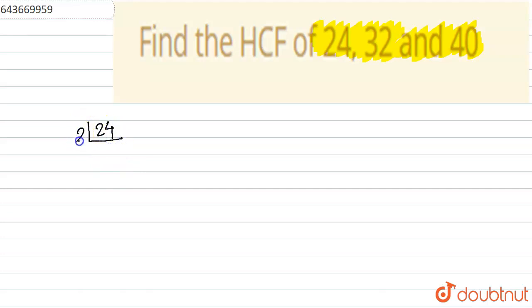So let us find the prime factors of 24. We have: 2 times 1 is 2, 2 times 2 is 4, 2 times 6 is 12, 2 times 3 is 6, and 3 times 1 is 3.